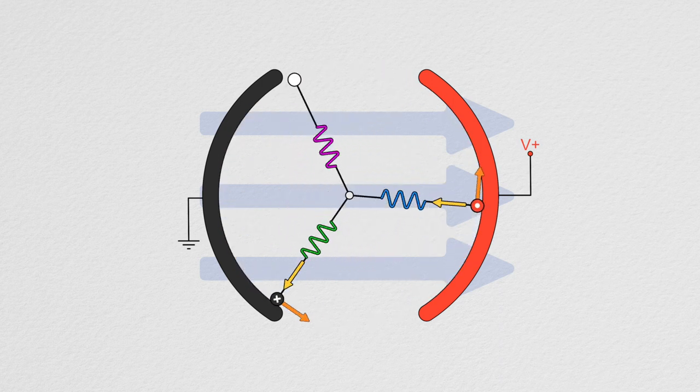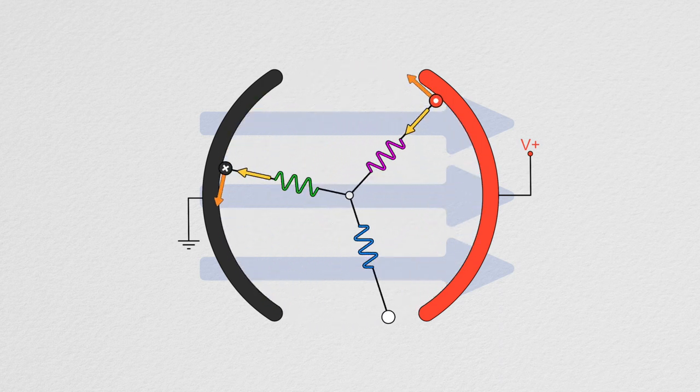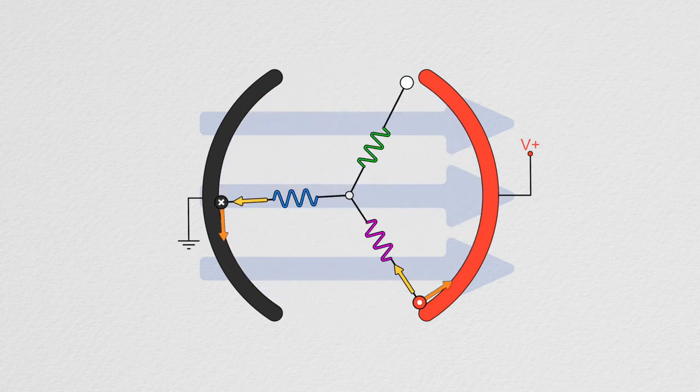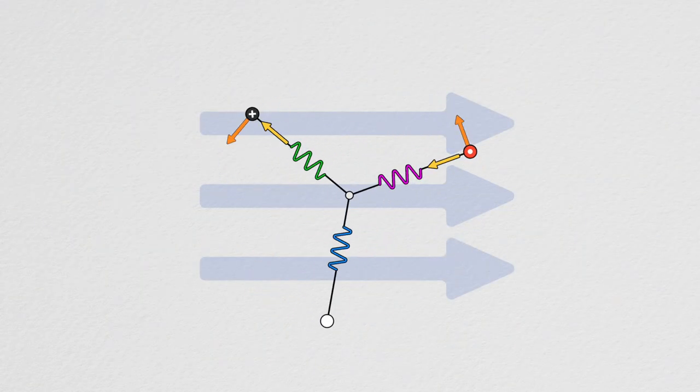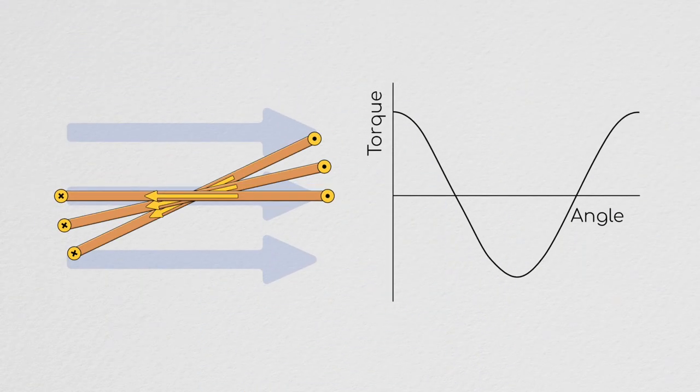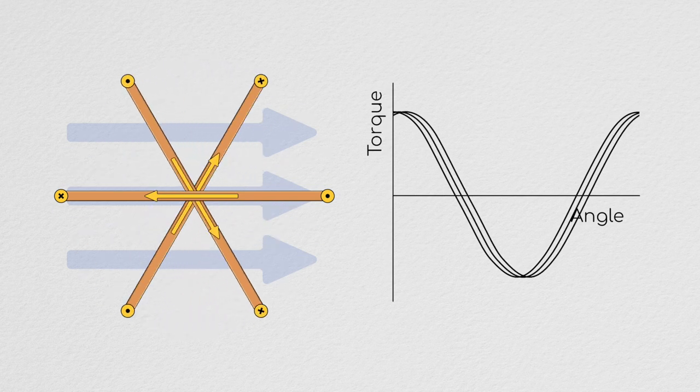In fact, what we essentially want to do with block commutation is replicate exactly what we were doing with brushed commutation, just without the brushes. Recall from episode 2 that for the three motor phases, each spaced 120 degrees apart, the torque curve looked like this.